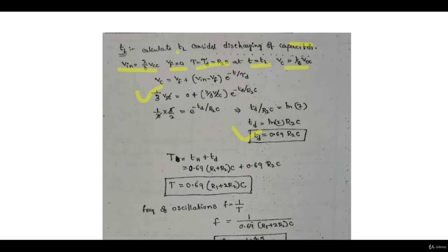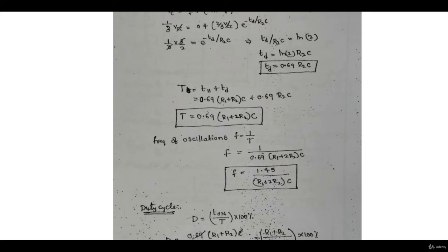You can see that charging and discharging times are different. The total time period is 0.69·(R1 + R2)·C + 0.69·R2·C, which gives T = 0.69·(R1 + 2R2)·C. This is the time period of oscillations and the output wave will be unsymmetrical. The frequency of oscillation is 1/T, so f = 1.45 / [(R1 + 2R2)·C], depending on the capacitor value and the two resistances.